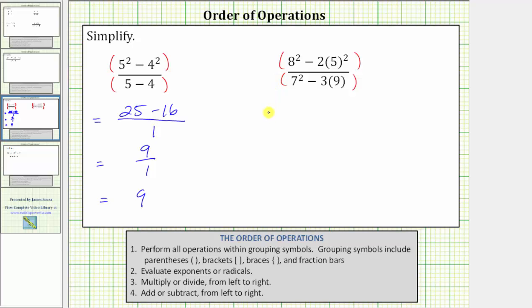Looking at just the numerator, we have multiplication, subtraction, and exponents. We simplify the exponents first. Eight squared equals 64. We have 64 minus two times five squared. Five squared equals 25.